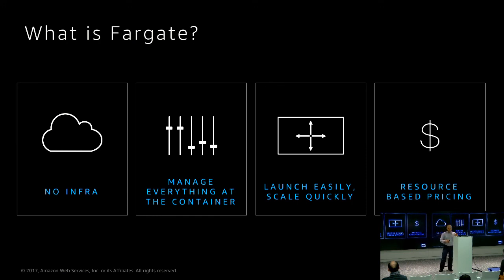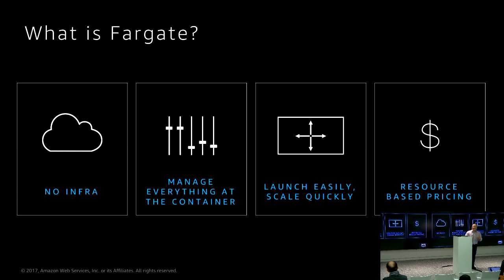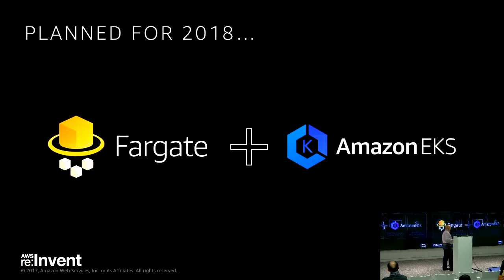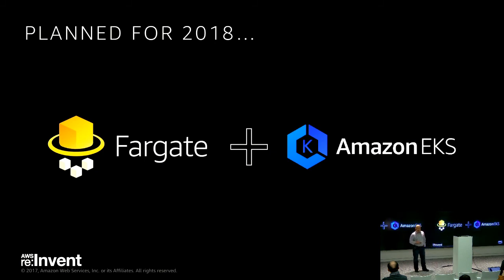With Fargate, what you manage is at the container level — it's cool. It's available in US East Northern Virginia with ECS, and it runs seamlessly. Pricing is based on the resources running — one CPU and two GB RAM multiplied by the number of seconds your containers run. It works with ECS, but it's on our roadmap to make this functionality available for EKS users too, so you can use it with Kubernetes. As developers, you'll just deal with your containers — all underlying infrastructure should be removed from you.